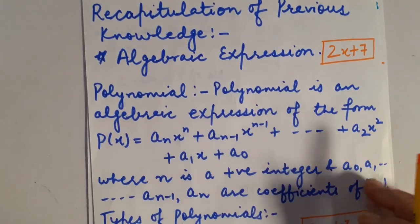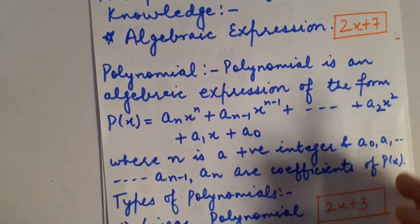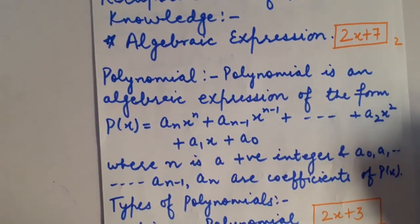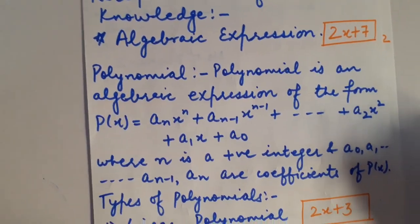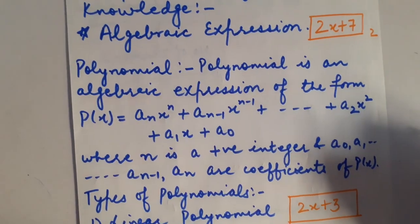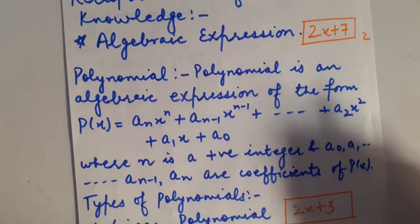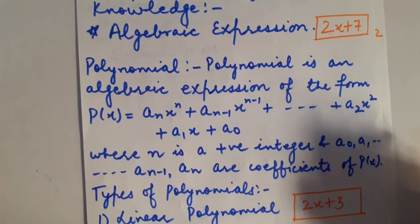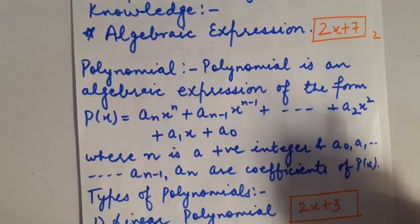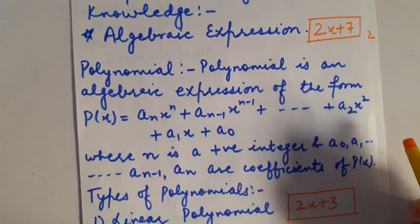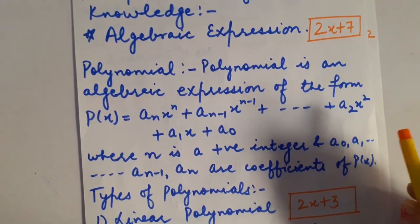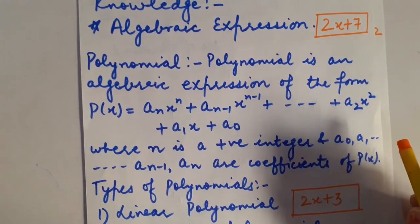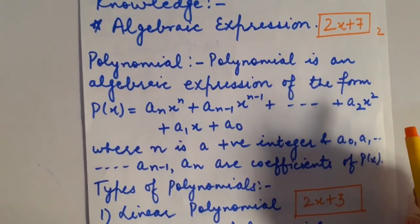Now, we are going to switch to polynomials. Polynomial is an Algebraic Expression in which the variable present in that polynomial — the degree of that variable — must be a whole number, meaning it must be a positive integer.